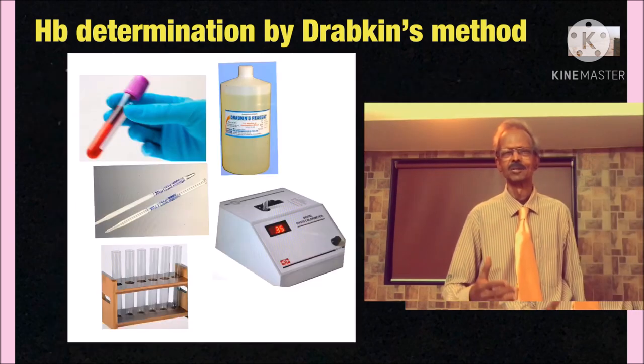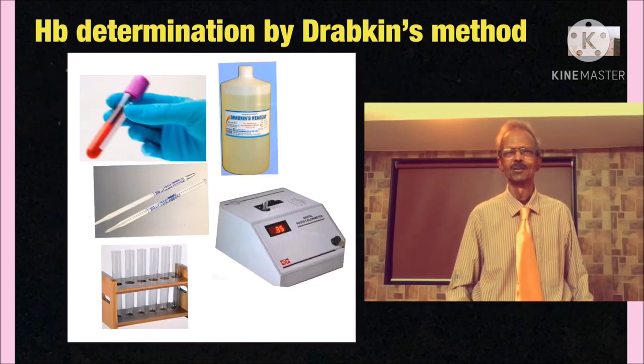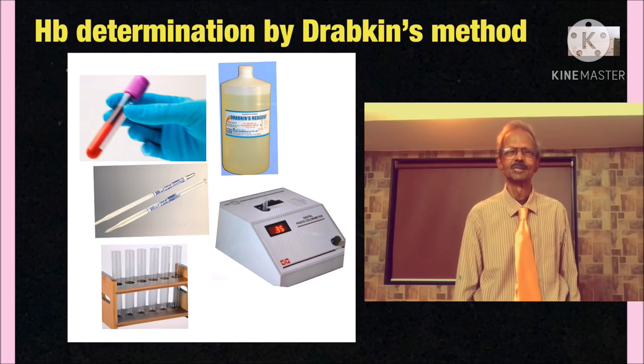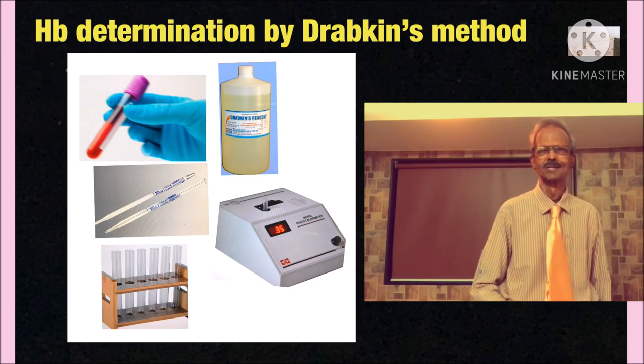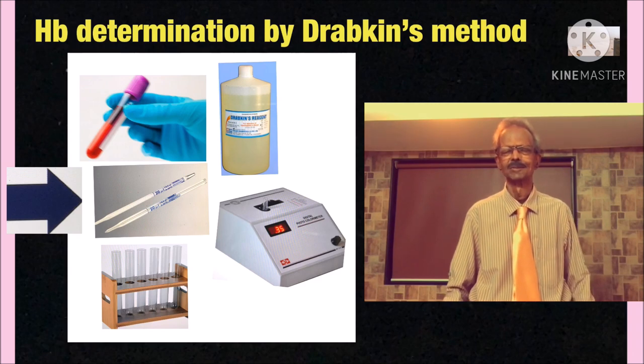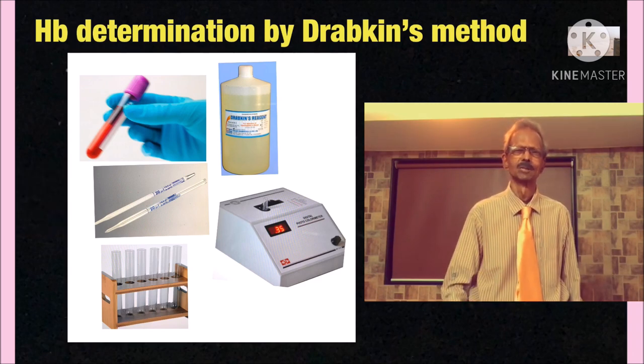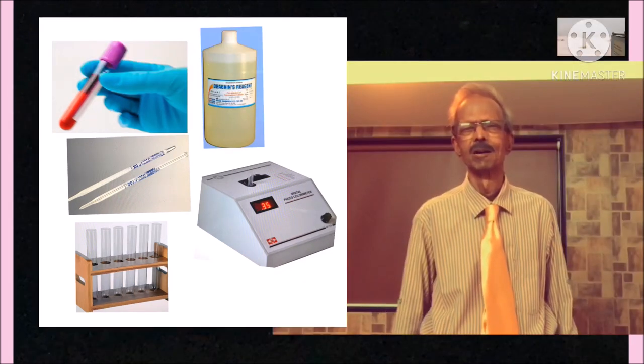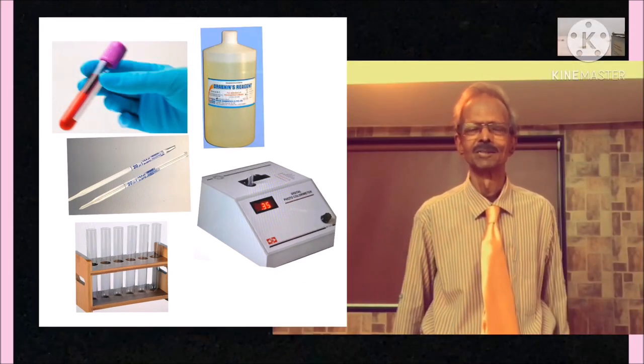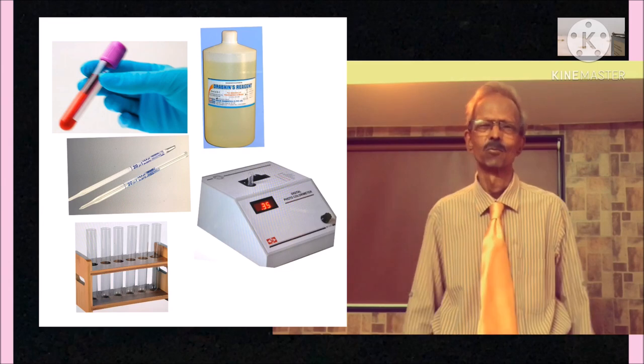Then all other requirements are as follows: Test tubes and test tube rack, hemoglobin pipette of 20 microliter, Drabkin's reagent and a photometer. For the test, Drabkin's reagent and blood should be at room temperature.